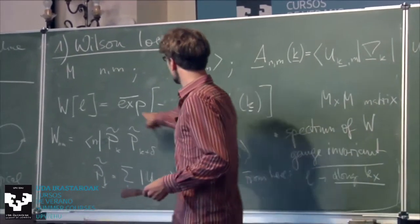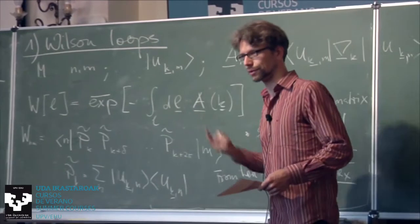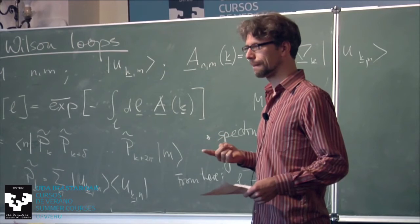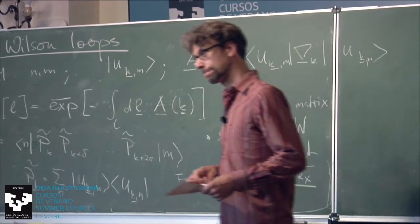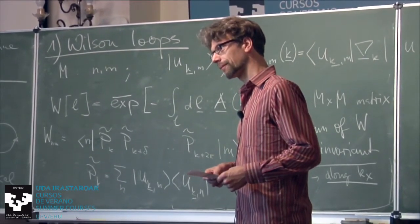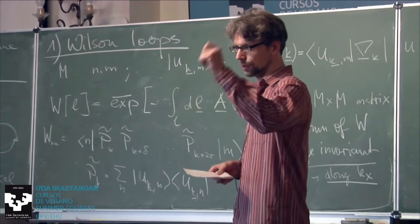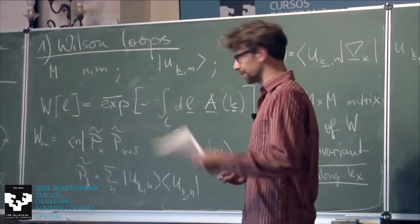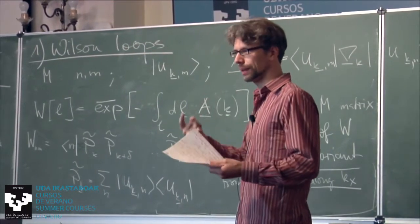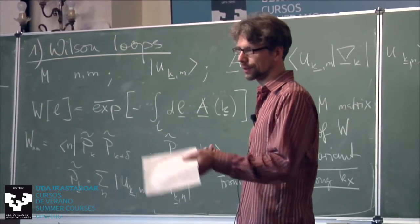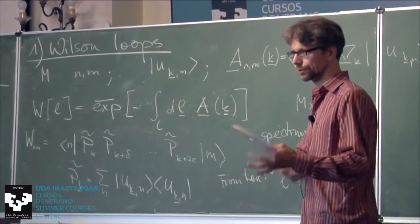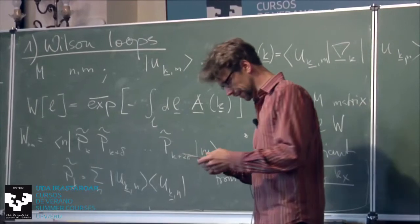The line above the exponential just denotes path ordering. Under U(1)^N gauge transformations — diagonal gauge transformations that don't mix the occupied bands — the projector is invariant. But in general, I want all U(M) gauge transformations.